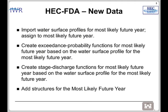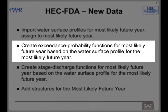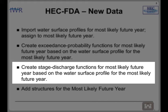Here's a quick list of the new data you will be importing in Workshop 4. You will import the water surface profiles for the most likely future year — make sure that you select the most likely future year when you assign your water surface profile so you don't overwrite the base year. Once you import your eight water surface profiles, you need to create the exceedance probability functions, making sure you are generating them from the proper water surface profile and for the correct future year, otherwise you can overwrite the base data. Then move on to the stage discharge functions, which you'll also generate from the water surface profiles.